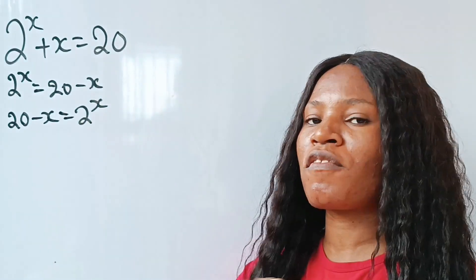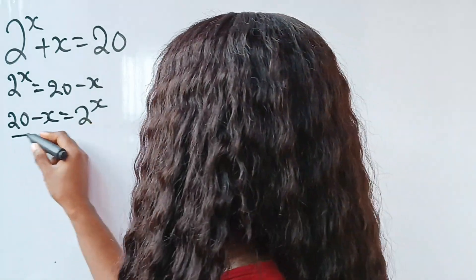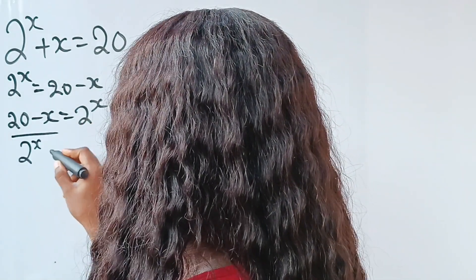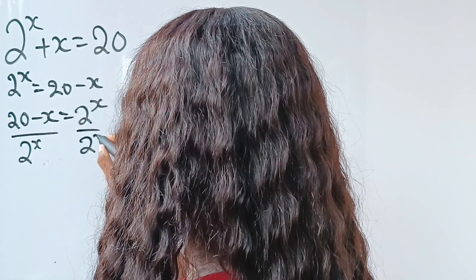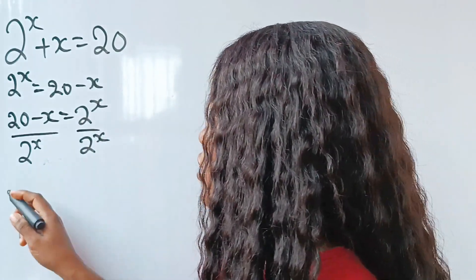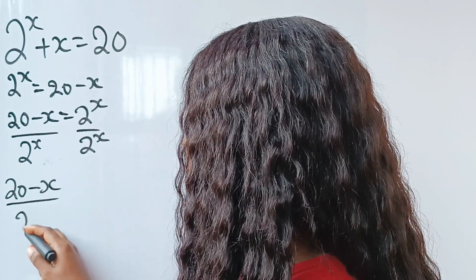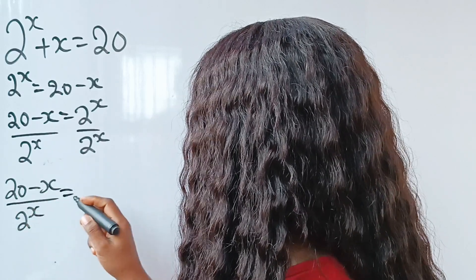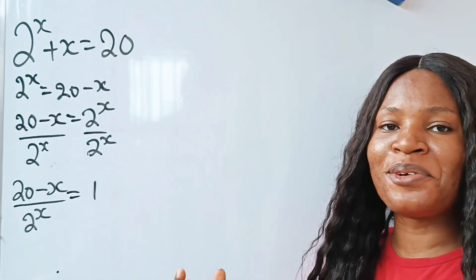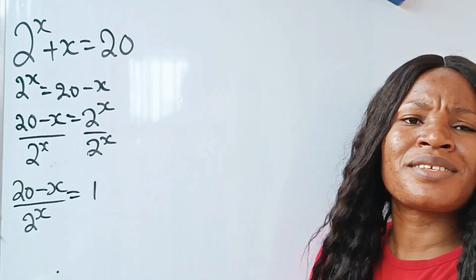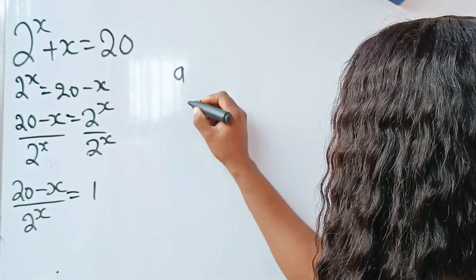Now let's divide through by 2 to the power of x, because I want to have a number on the right side. So dividing both sides by 2 to the power of x, we get: (20 minus x) divided by 2 to the power of x is equal to 1. This is where the W function comes in.